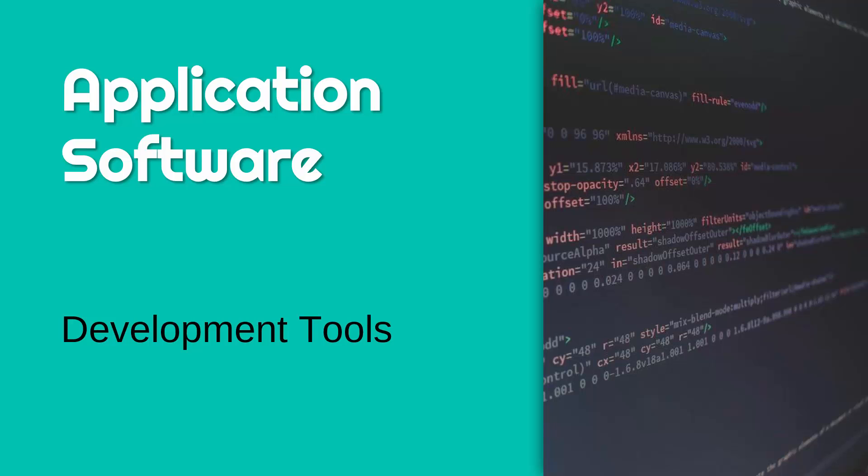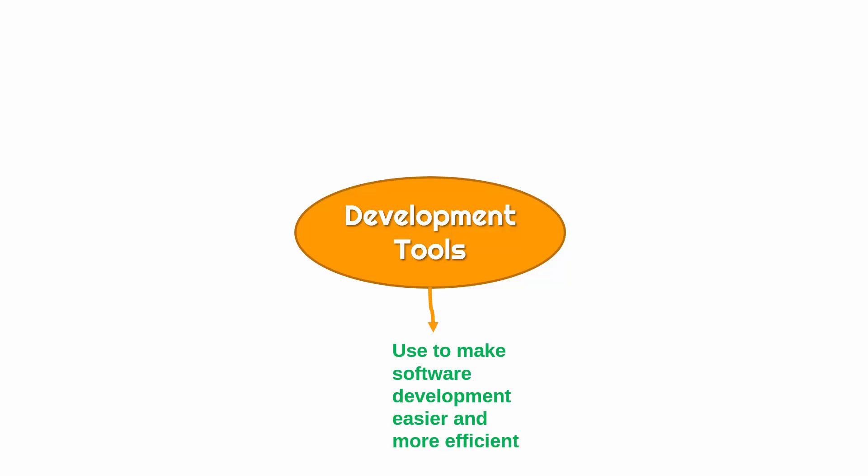We're going to start looking at some more specific examples of application software, starting with development tools. Development tools are a category of software used to make software development easier and more efficient. By software development, this really means programming — writing code which makes up the software. Here are just a few different examples of development tools.